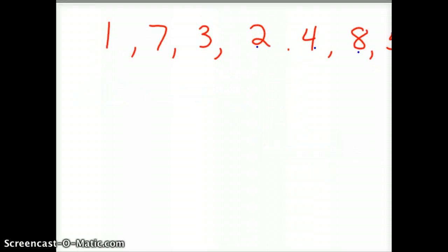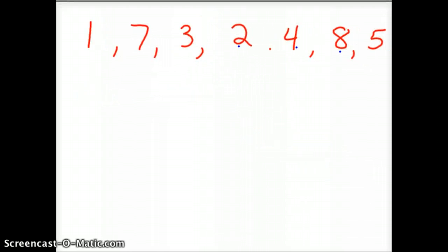So here's a set of data. We've got 1, 7, 3, 2, 4, 8, 5. Well, first off, you've got to make it an array by ordering it. So I'm going to go 1, 2, 3, 4, 5, 7, and 8.